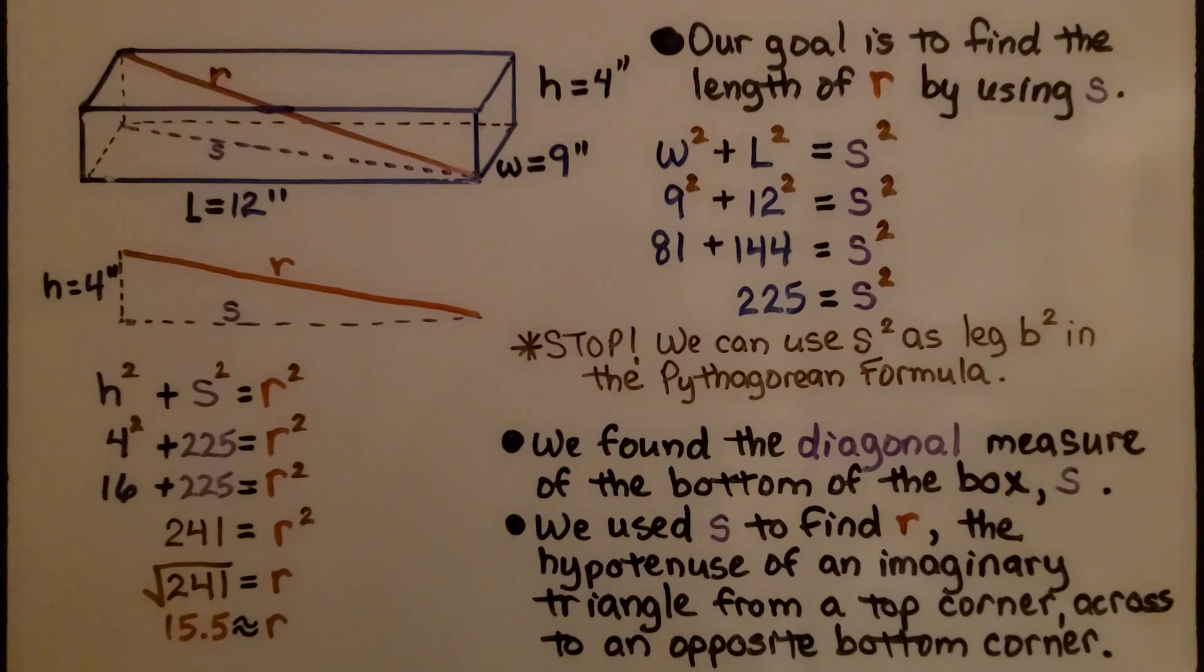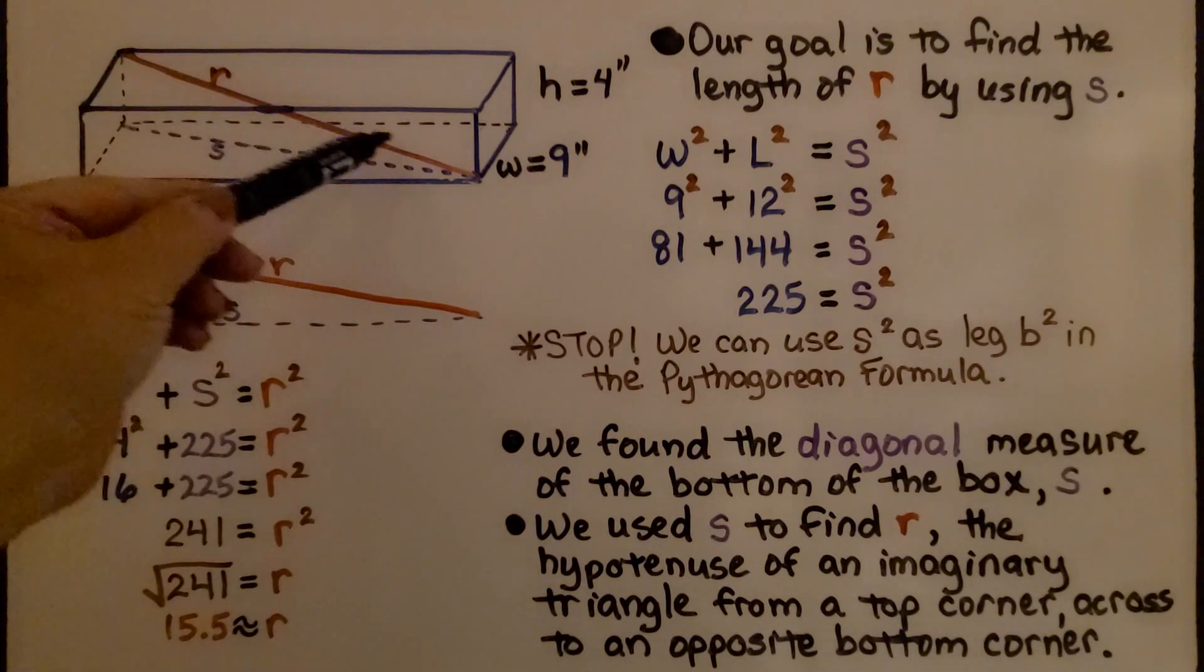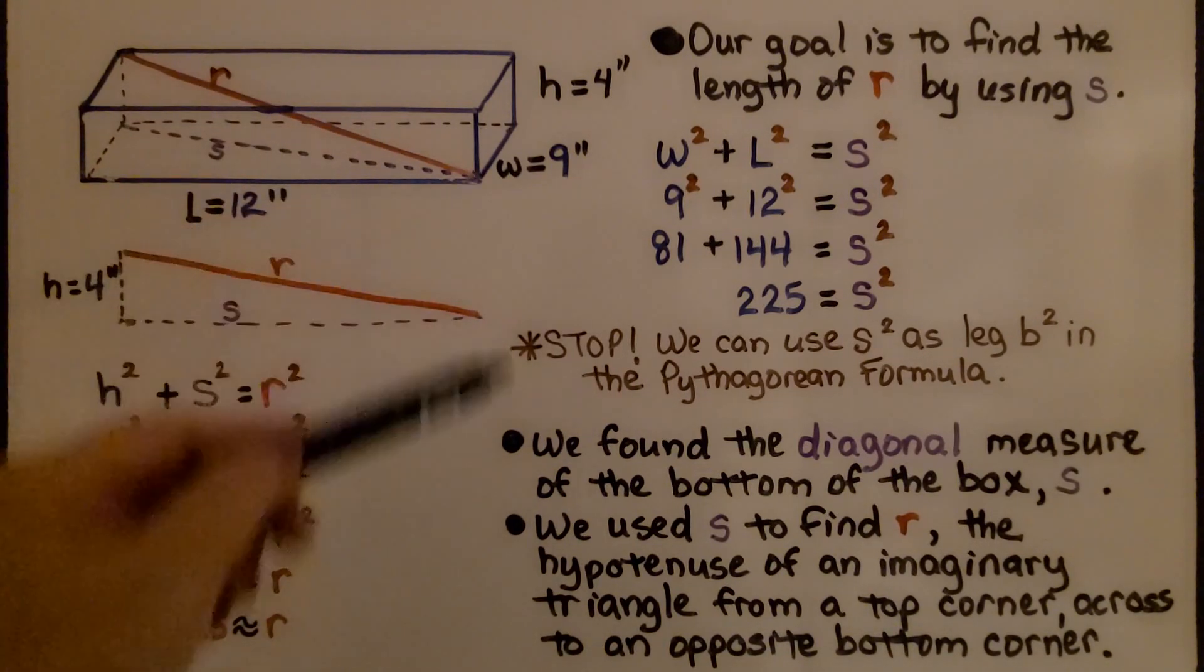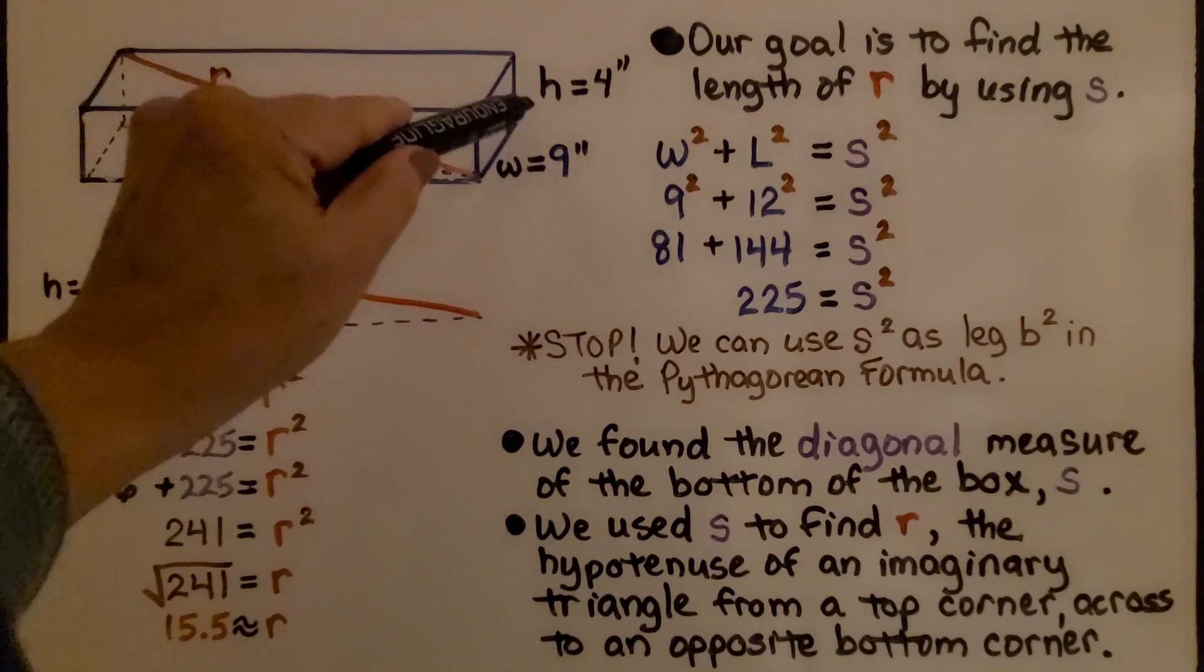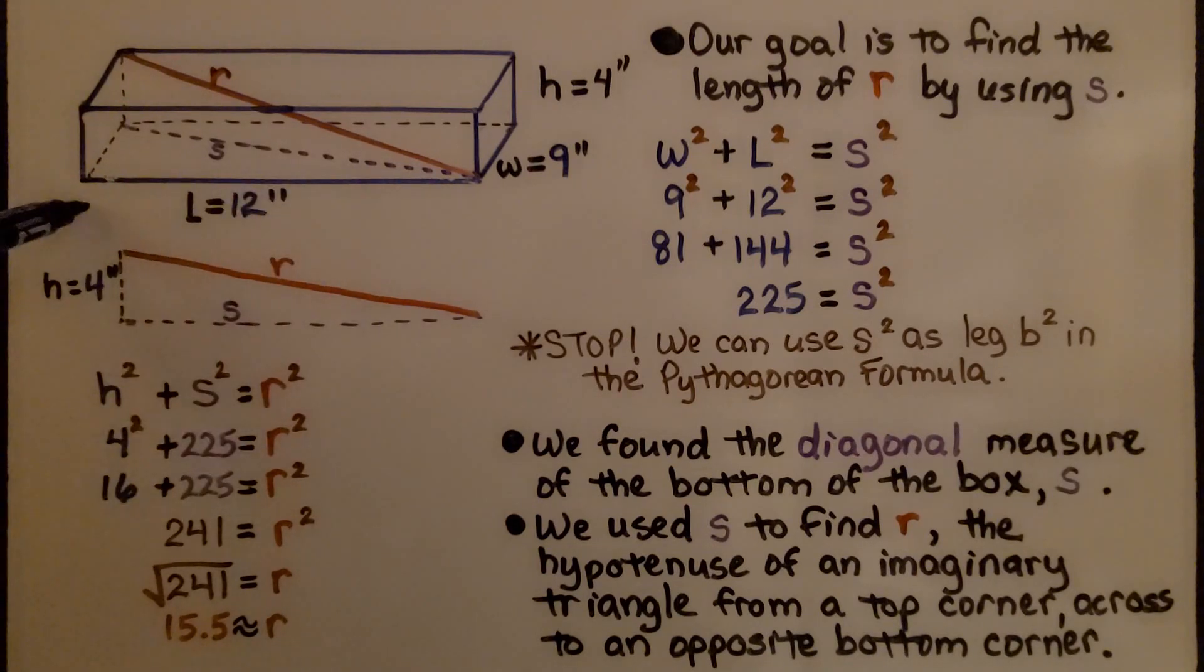So our goal is to find the length of r and we're going to do it by using s. So s is the diagonal on the bottom of the box. R is going from the top corner across to the opposite corner at the bottom. We know the height is 4 inches. We know the width is 9 inches. We know the length is 12 inches.